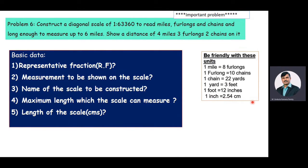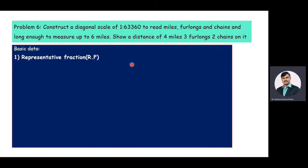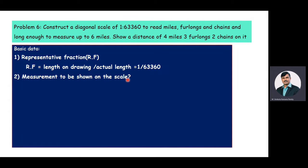Now we'll answer these questions. As you know, representative fraction is a ratio of length on the drawing to actual length. Here the representative fraction value is given as 1 is to 63,360. The measurement to be shown on the scale is four miles three furlongs and two chains — four miles on the main scale, three furlongs on the subscale, and two chains on the sub-subscale.